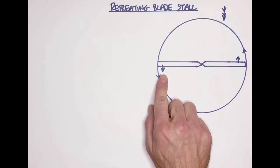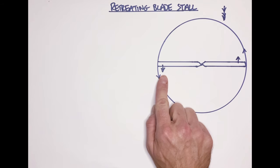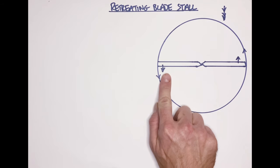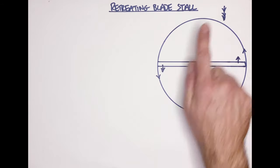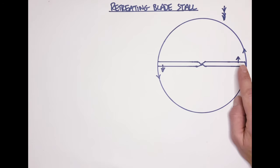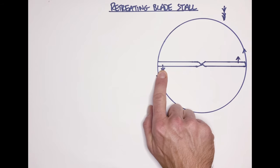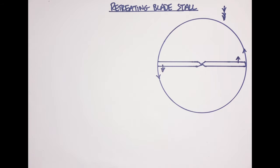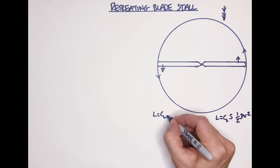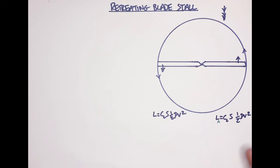On the retreating blade, the rotational airflow is going in the opposite direction, which means the oncoming airflow due to the forward movement of the helicopter is counteracting it. The result is that the velocity of air over the blade on the advancing side is much faster than the velocity of air over the retreating side.